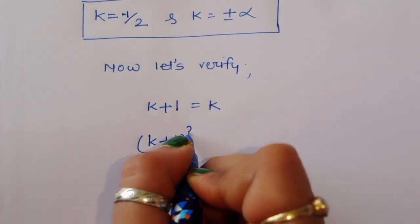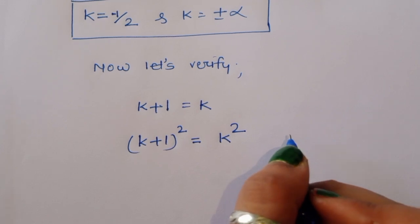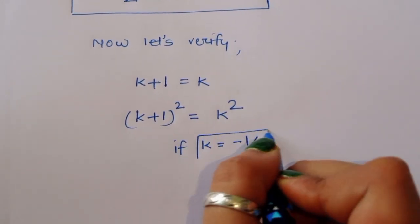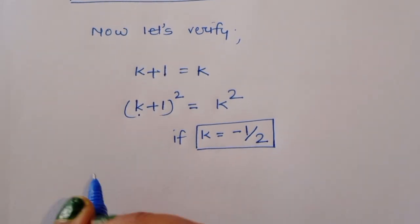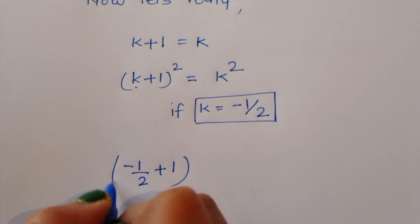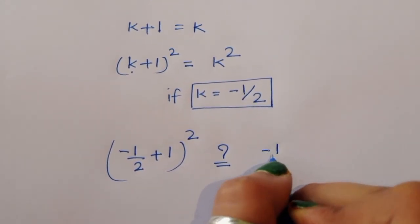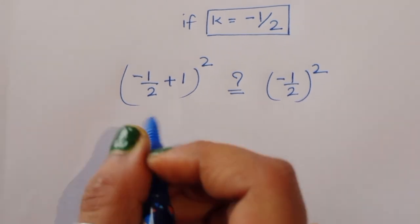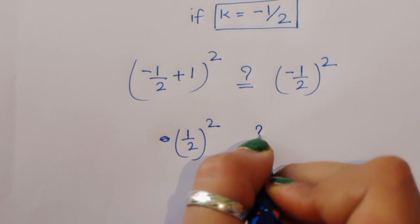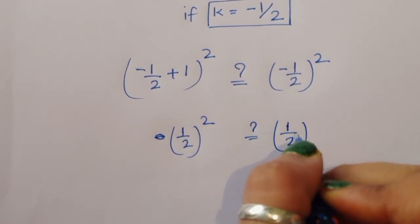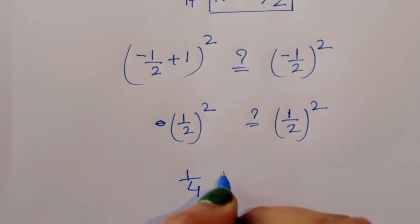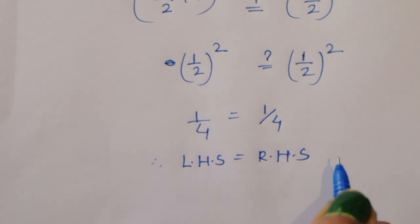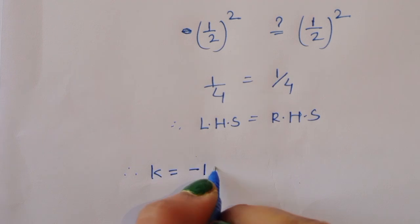We are taking √(k+1) = √k and squaring both sides, so (k+1)² = k². If k = -1/2, then: (-1/2 + 1)² equals (-1/2)². That is (1/2)² on the left, and (-1/2)² equals (1/2)² on the right. So 1/4 = 1/4. Therefore LHS is equal to RHS. So the value k = -1/2 is correct.